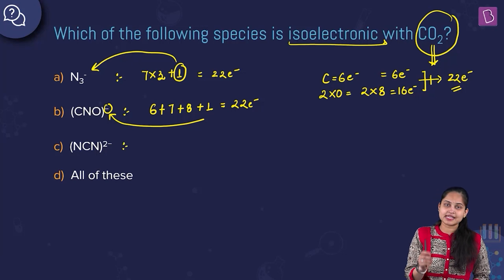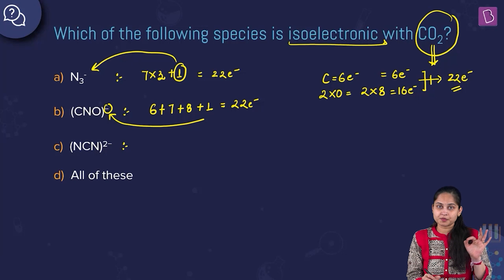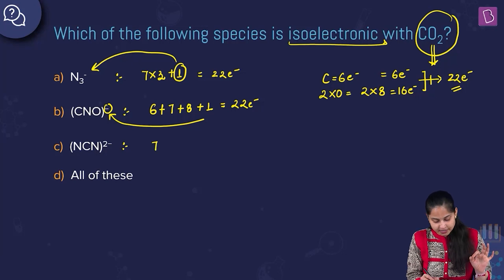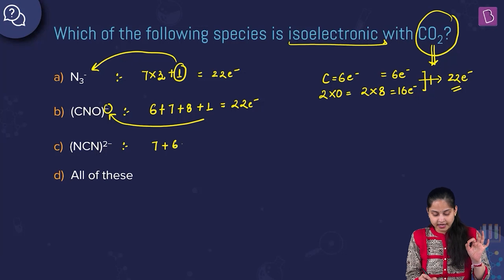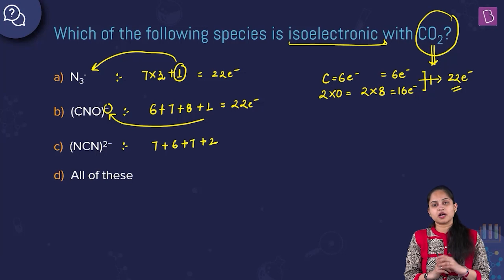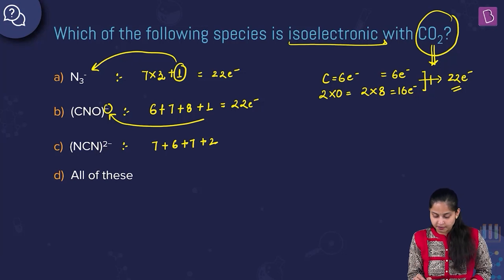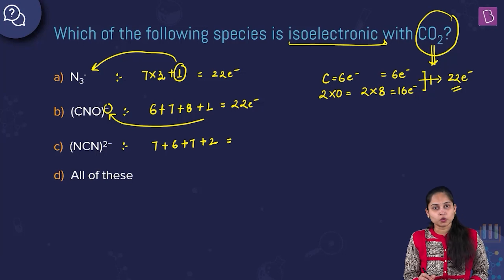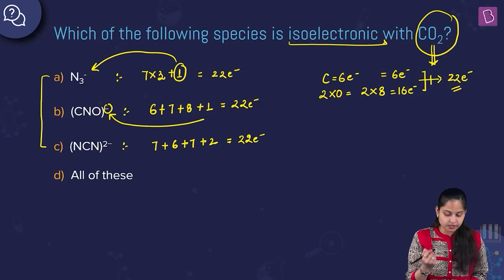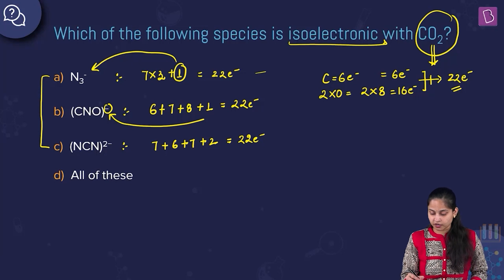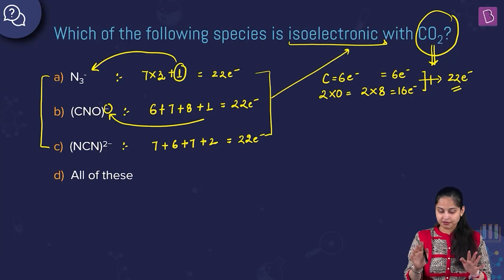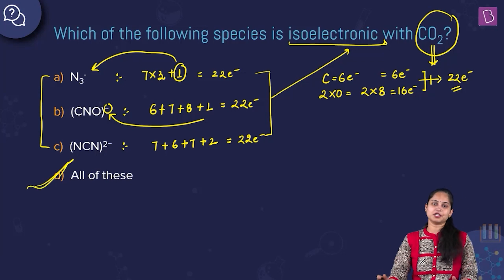For the N₂C²⁻ ion: nitrogen has 7 electrons, carbon has 6 electrons, plus another nitrogen (7 electrons), plus 2 for the negative charge: 7 + 6 + 7 + 2 = 22 electrons. All three species — N₃⁻, CNO⁻, and N₂C²⁻ — are isoelectronic with carbon dioxide, so option D is the right answer.